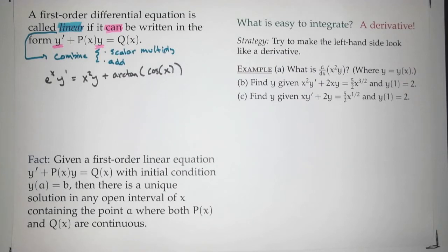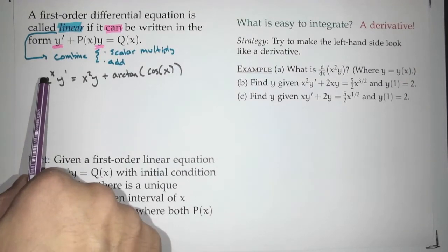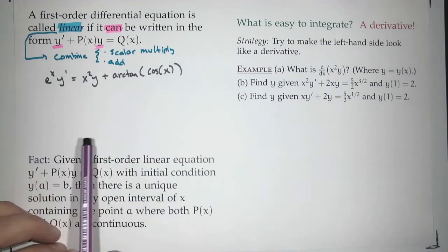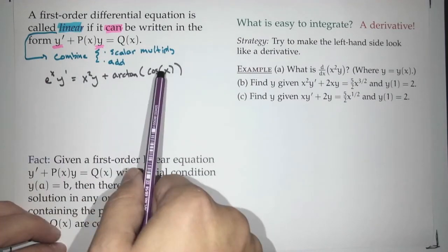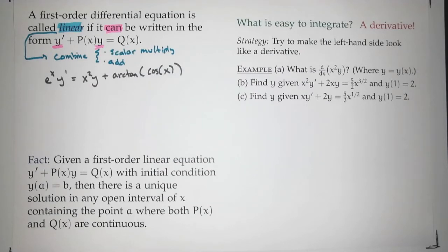Do we care about the fact that you have things like x² or arctan(cos(x))? No. We're looking at the y parts. If the y parts are behaving in a nice linear way, we say it's linear.